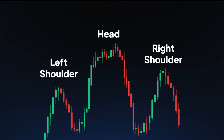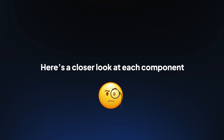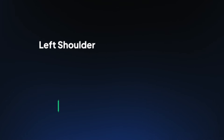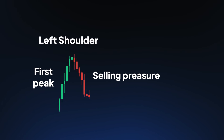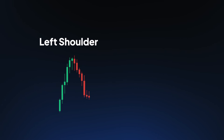The middle peak, or the head, is the highest, flanked by the left and right shoulders. Here's a closer look at each component. Left shoulder: the first peak, followed by a decline, signalling selling pressure.